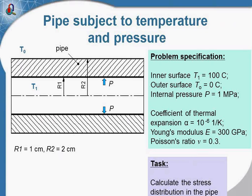Let's move to the next example where the mechanical force is caused by thermal expansion. This is a gas pipe that contains gas under pressure, with a gas temperature of 100 degrees Celsius while the outside air has a temperature of zero Celsius. The internal pressure of the gas is 1 megapascal. Our task is to calculate the stress distribution in the pipe caused by the thermal expansion and the internal pressure of the gas.